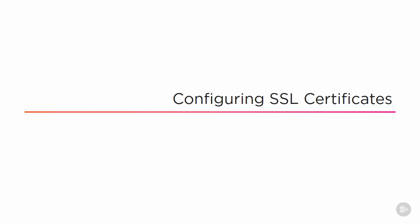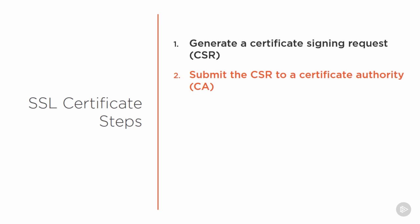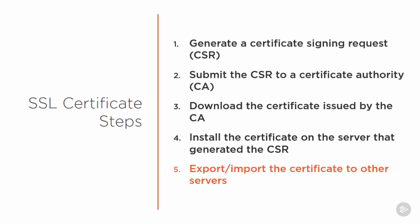Let's move on to configuring SSL certificates for Exchange. The first step is to generate a Certificate Signing Request (CSR). Once you have the CSR, submit it to a certificate authority and they'll issue the certificate. Download and install it on the same server that generated the CSR. After installing it on that first server, export it and import the certificate to other servers — it's recommended to use the same certificate across multiple servers.